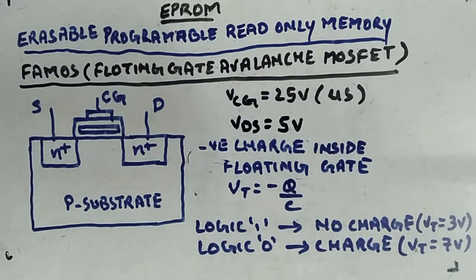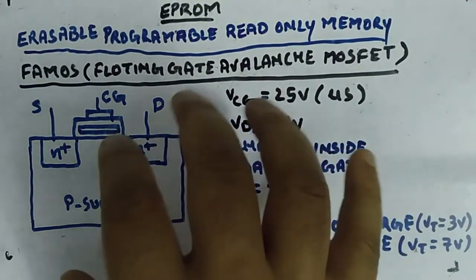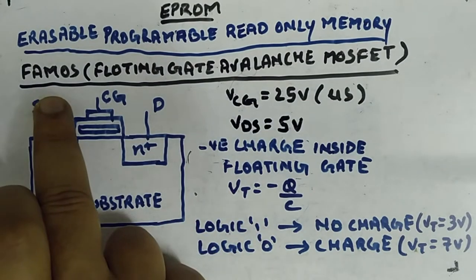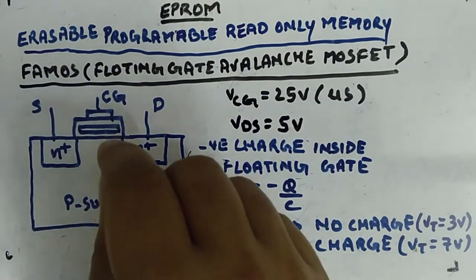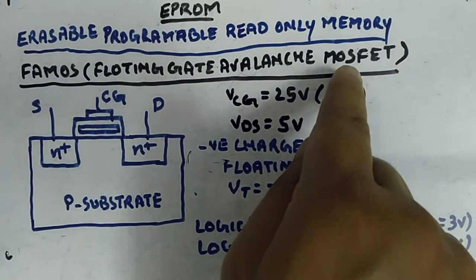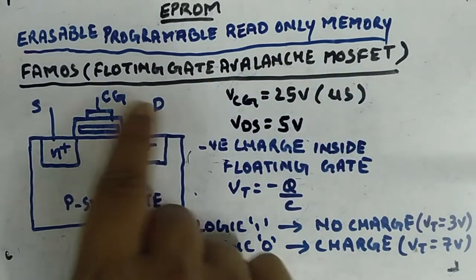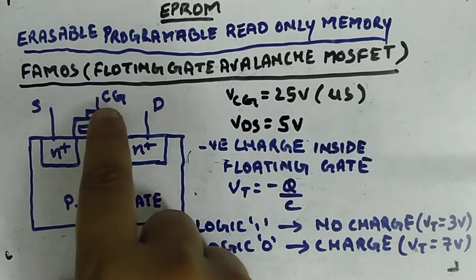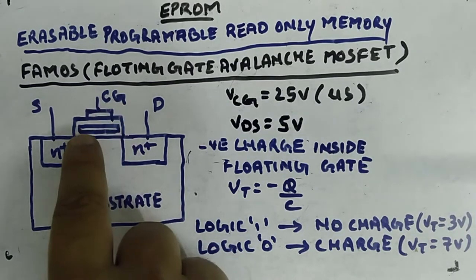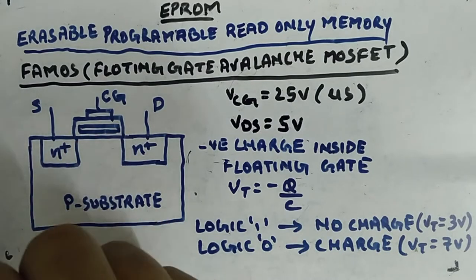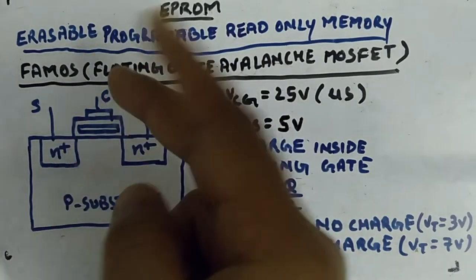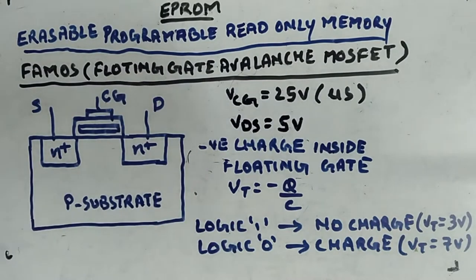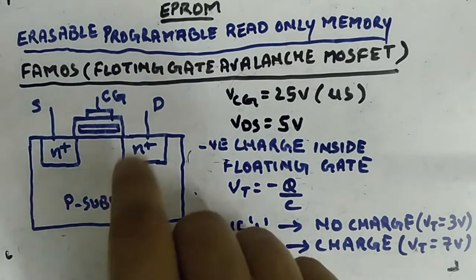How we're going to erase it I'll tell you later. First, we are not using a normal MOSFET — we'll be using something called FAMOS, which is a transistor similar to NMOS but with a slight change. FAMOS stands for Floating Gate Avalanche MOSFET. You are already aware of NMOS — this is the structure with N+ source, N+ drain, and substrate. Here you have a control gate (CG), and in the center there is a floating gate.